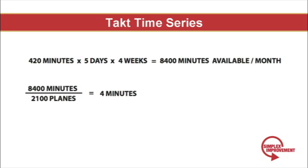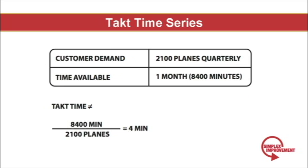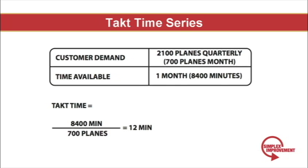Let's look at another example. The customer tells me he wants 2,100 planes over a quarter, and let's see how much we have to produce over one month to meet that. A simple approach would be to take 8,400 minutes and divide by 2,100, getting a Takt time of 4 minutes — but this is incorrect. You have to remember that the time period in both the numerator and the denominator have to match. The numerator is expressed in months, so we have to convert the denominator into months as well. 2,100 planes per quarter is actually 700 planes per month. Taking 8,400 divided by 700 planes gives a Takt time of 12 minutes.